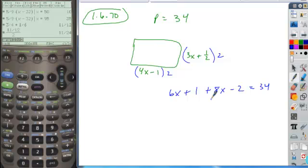So if we combine our x's, we get 14x. Plus 1 and minus 2, that's negative 1. Add 1 to both sides, we get 14x is equal to 35.